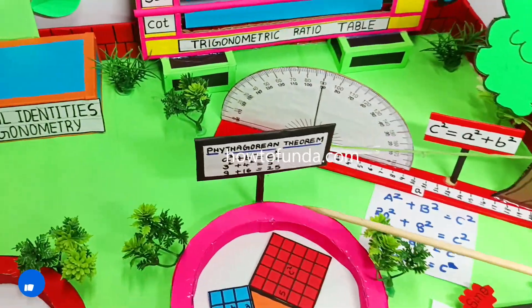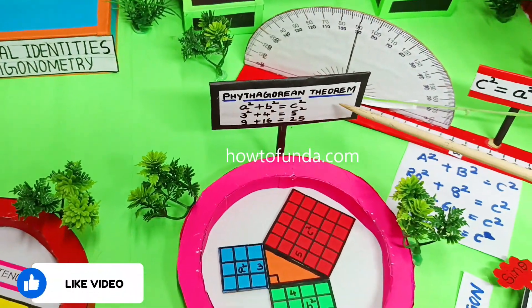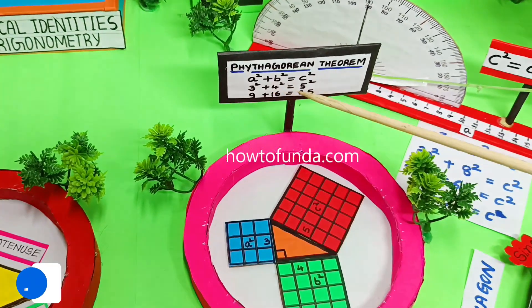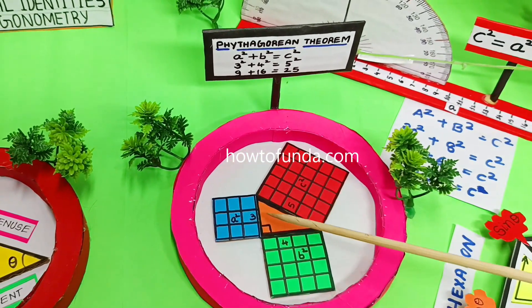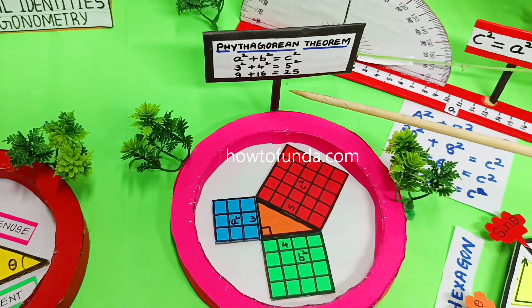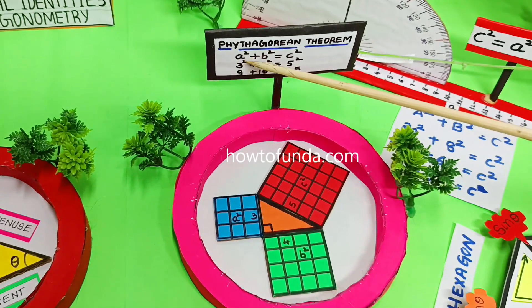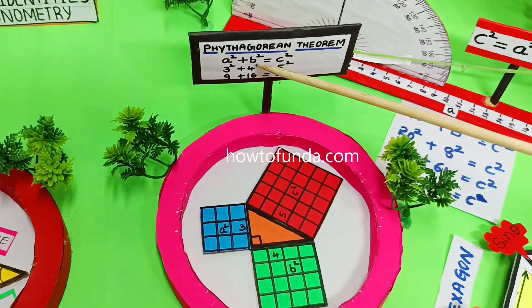Now we also have one more theorem, which is Pythagorean theorem again, depicted in a different way, which is a right angle triangle with three squares in it. We have three squares: a² and b² is equal to the bigger square.